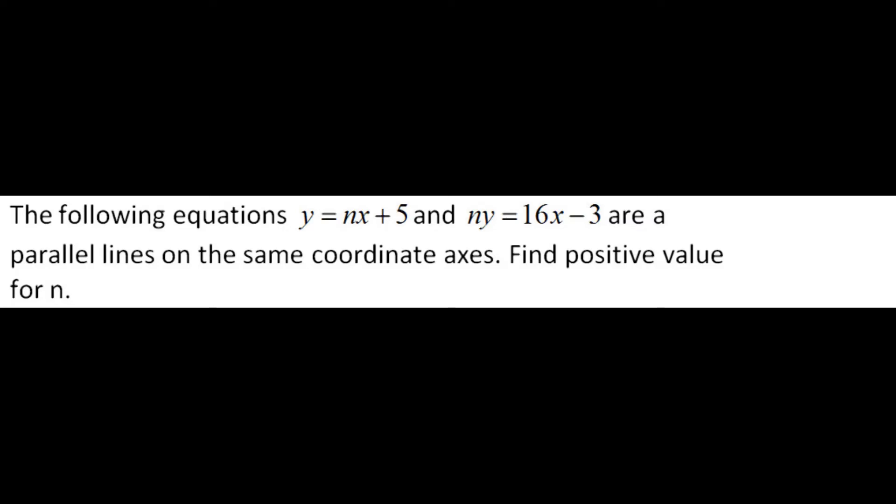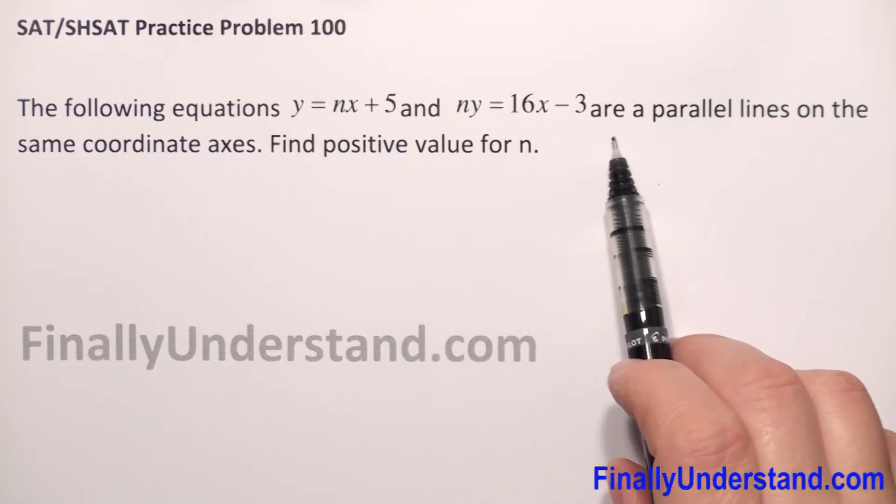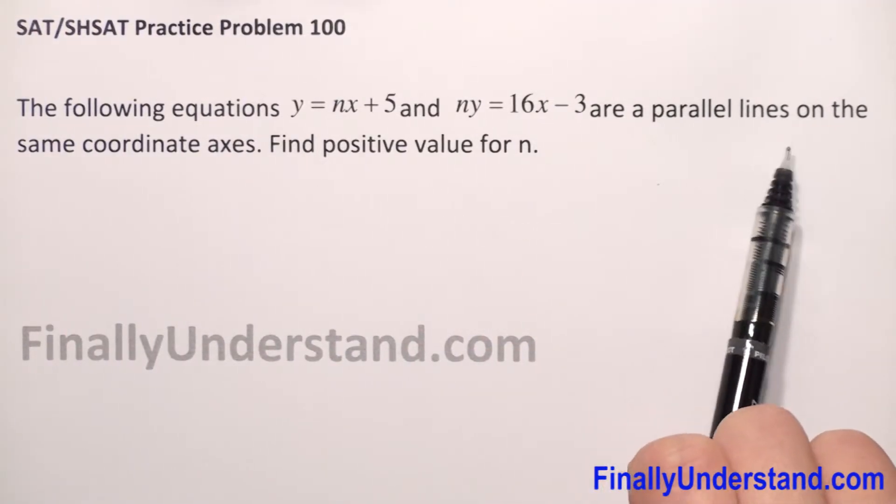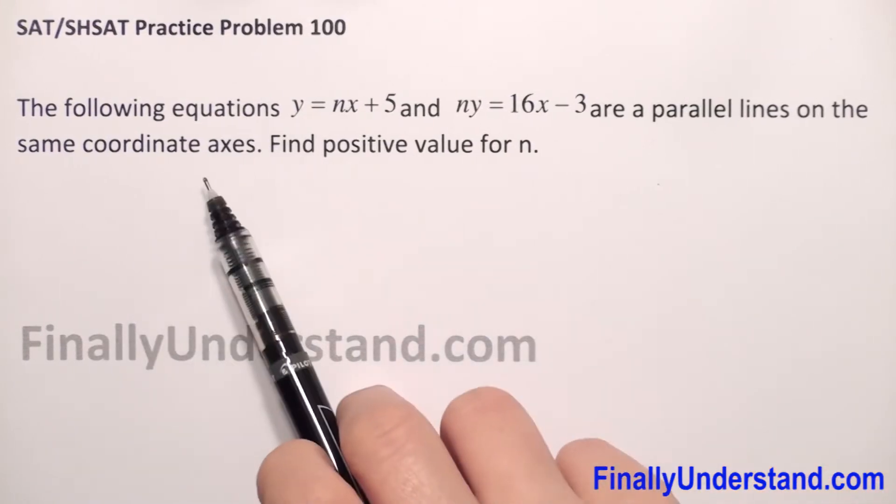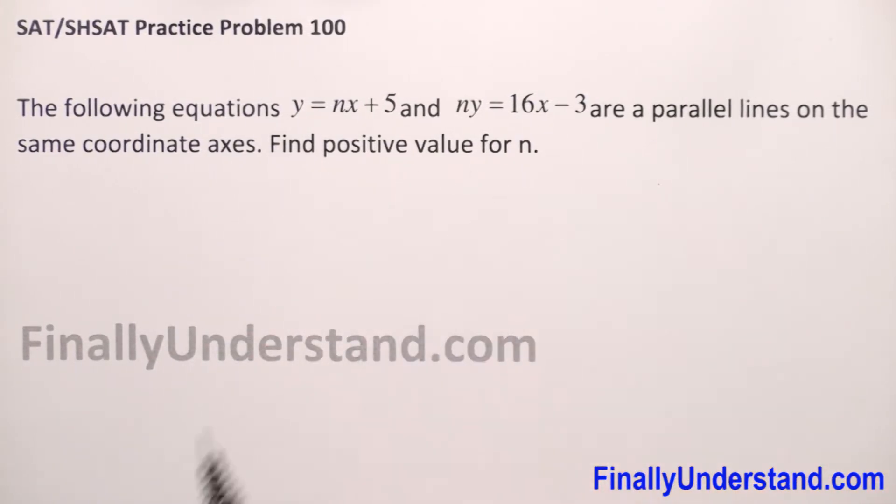The following equations: y = nx + 5 and ny = 16x - 3 are parallel lines on the same coordinate axes. Find positive value of n.